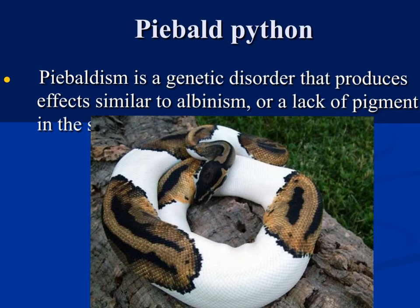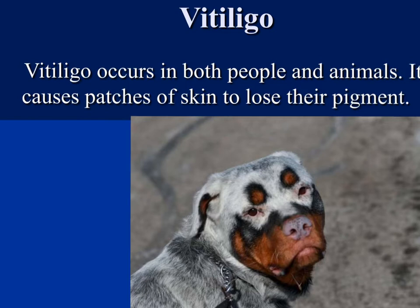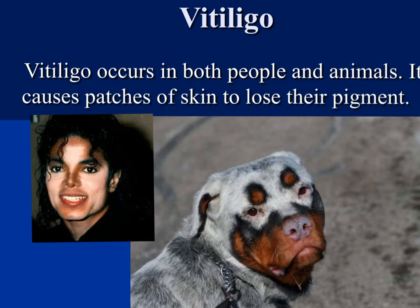With this python, we see piebaldness — a disorder where you have some components of albinism or lacking of pigments, alongside areas where pigmentation is present. You can also see this in various species of clownfish. This occurs in both people and animals. In people, you would see patches of discoloration or loss of pigmentation in the skin. One of the more famous people to suffer from vitiligo was Michael Jackson. You can see the difference in pigmentation in the dog here as well.